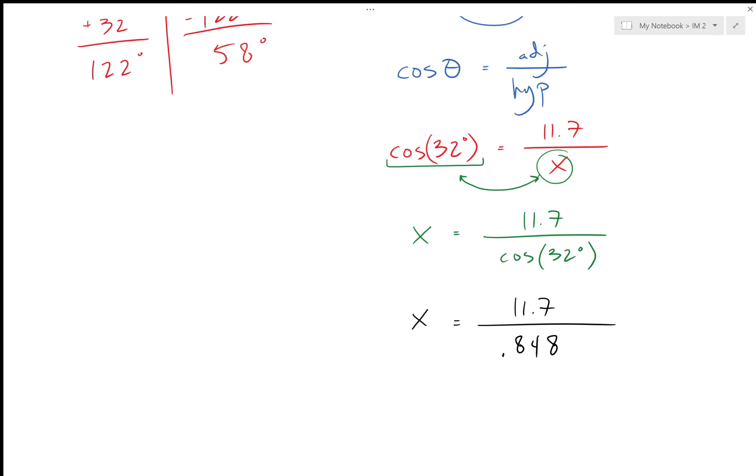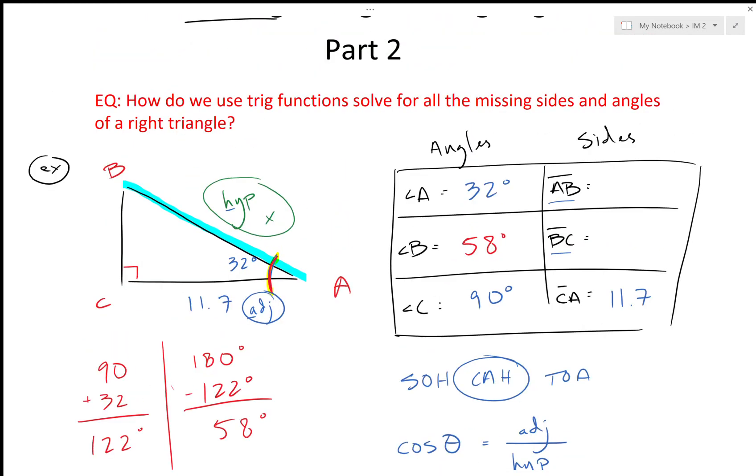Whether it's the tenths or the hundredths. And that will take you 11.7 divided by 0.848, and we get something in the neighborhood of 13 point—and so I've got a 797, and if we're rounding it to one decimal place, let's call that 13.8.